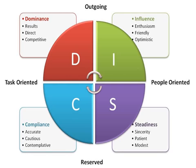The DISC assessment tool identifies 15 patterns: Achiever, Agent, Appraiser, Counselor, Creative, Developer, Inspirational, Instigator, Objective Thinker, Perfectionist, Persuader, Practitioner, Promoter, Result-Oriented, and Specialist.